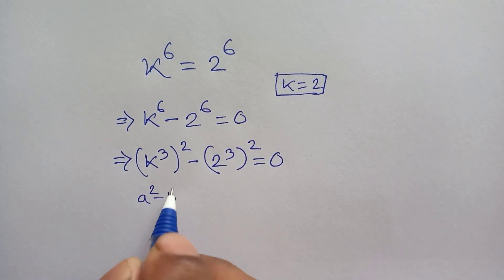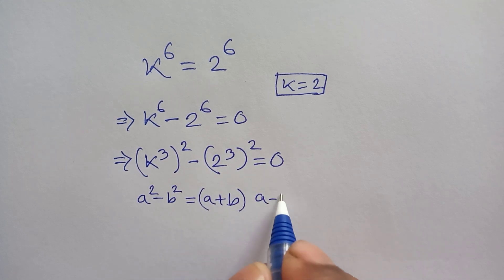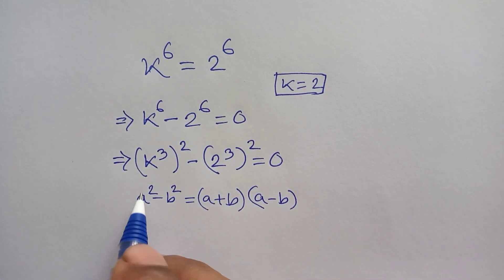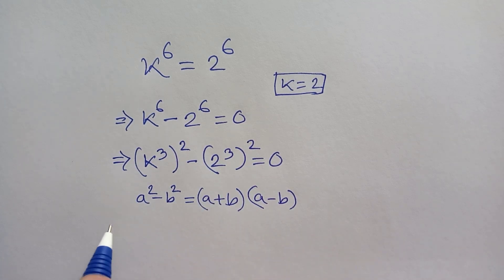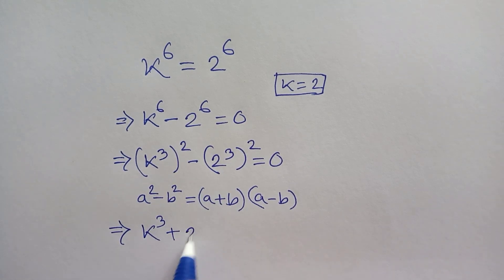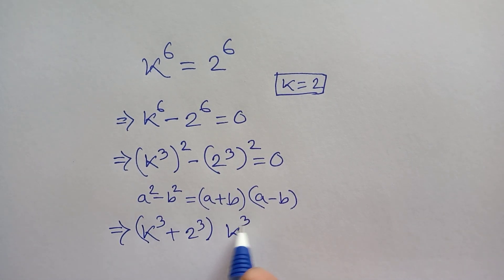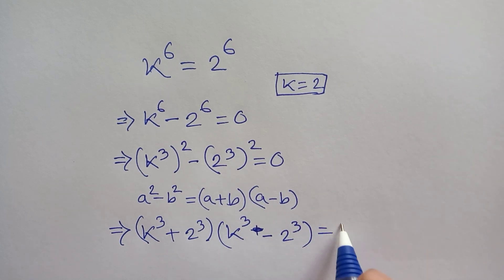Here we apply the a squared minus b squared formula: a squared minus b squared equals a plus b times a minus b. If we think of k cubed as a and 2 cubed as b, it will be k cubed plus 2 cubed, bracket, times k cubed minus 2 cubed, is equal to 0.